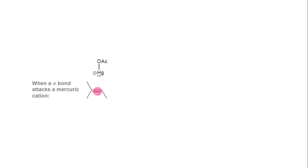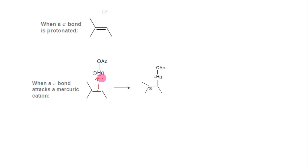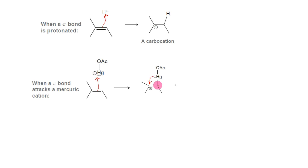When a pi-bond attacks a mercuric cation, the nature of the resulting intermediate is quite different from the intermediate formed when a pi-bond is simply protonated. When a pi-bond is protonated, the intermediate formed is simply a carbocation, as we have seen in the acid-catalyzed hydration lecture. In contrast, when a pi-bond attacks a mercuric cation, the resulting intermediate cannot be considered a carbocation, because the mercury atom has electrons that can interact with the nearby positive charge to form a bridge.